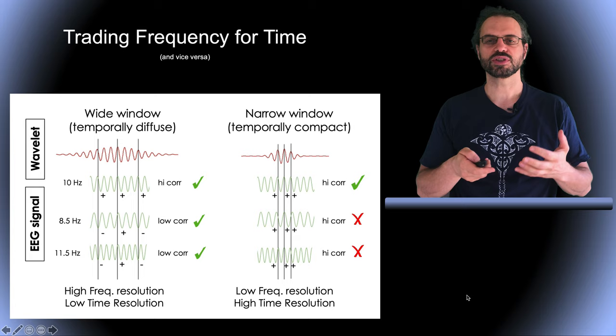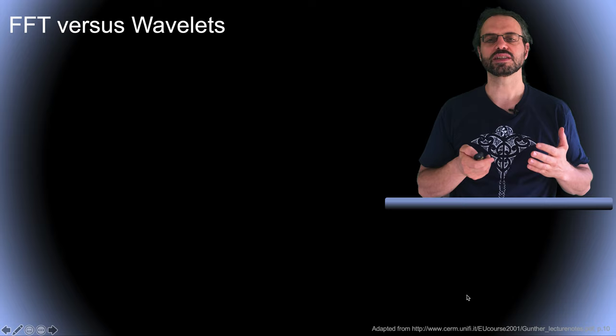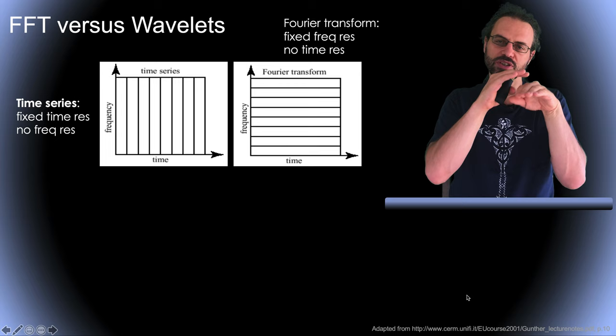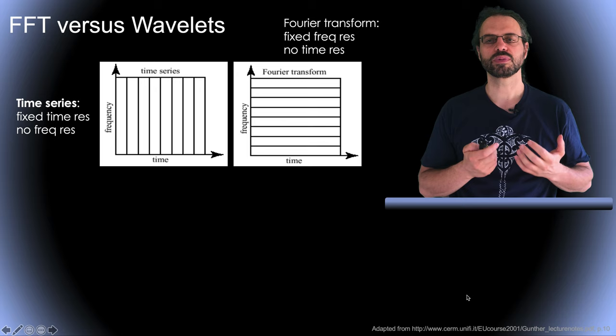Let's look at how we can use the time-frequency trade-off of wavelets. This represents time series with fixed time resolution and no frequency resolution. By contrast, this represents a Fourier transform with fixed frequency resolution and no time resolution. As we've seen when we compute the power spectrum, all time resolution is lost.